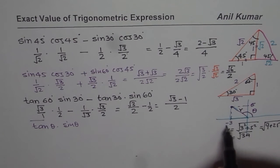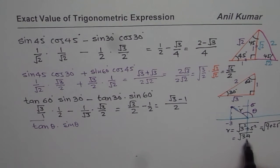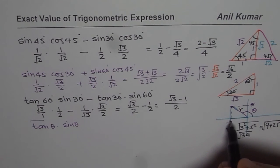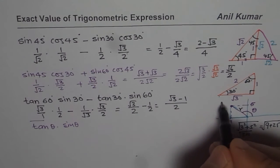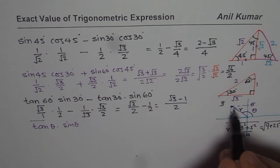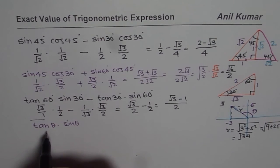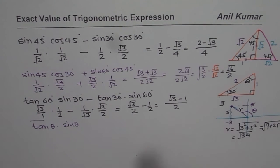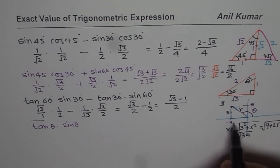We want to calculate tan θ times sin θ. Tan θ is opposite over adjacent. Since we are in quadrant 2, tan is negative. The opposite side is 5 and the adjacent side is 3, so tan θ equals negative 5 over 3.